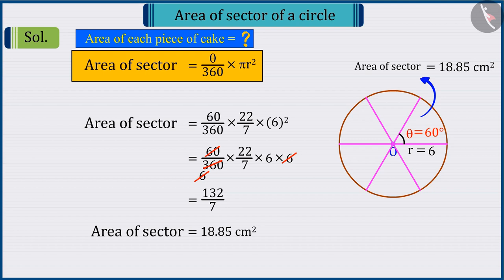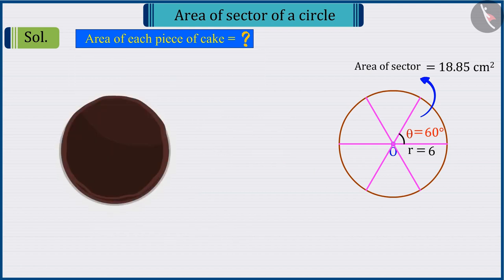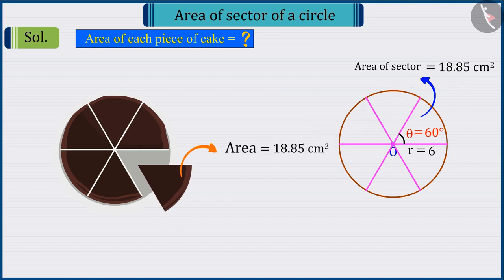And we are dividing the cake into six sectors. So, we can say that, the area of each piece of cake will be 18.85 square centimeters.